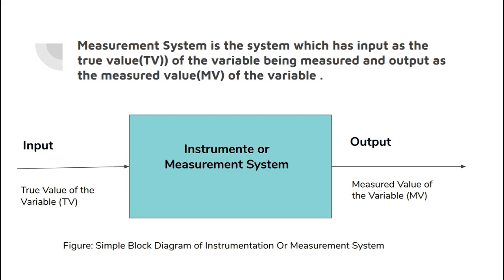The measurement system has an input as a true value, and after being measured, some error is added to that value, and the output is the measured value. This is the simple block diagram of the instrumentation system where we have a true value as an input and a measured value as an output. Errors may be caused due to reading of the scale or there might be many other reasons for the error.